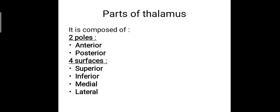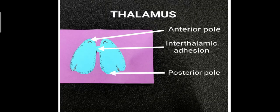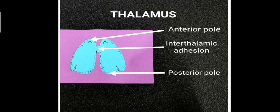The thalamus is composed of two poles and four surfaces. The poles are the anterior pole and the posterior pole. The four surfaces include the superior, inferior, medial and lateral surfaces. The thalamus is 3 cm anteroposteriorly and 1.5 cm laterally, with an anterior pole, a posterior pole, and the interthalamic adhesion connecting the two thalami.